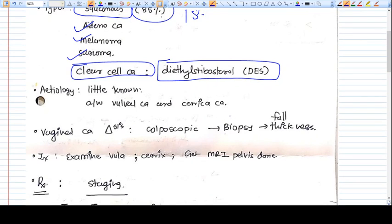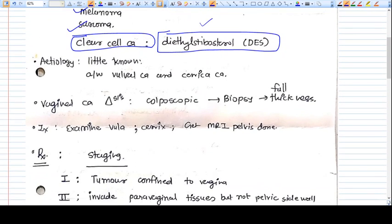It was used for miscarriage prevention, bleeding, and other symptoms. It was a very useful drug once upon a time. Now it's not used, and that's why the incidence of clear cell carcinoma has also decreased.